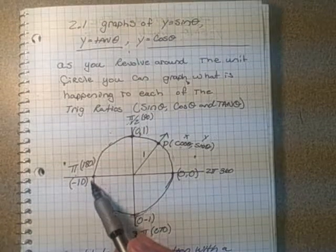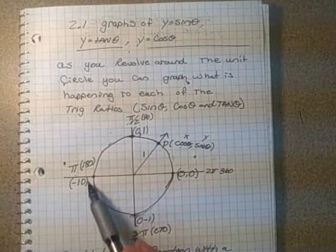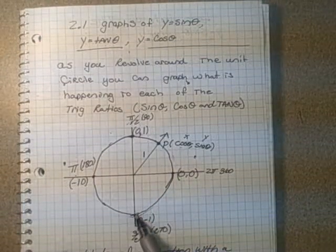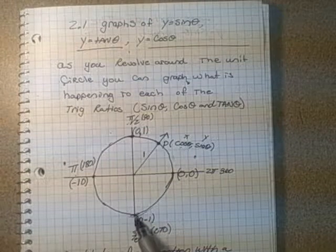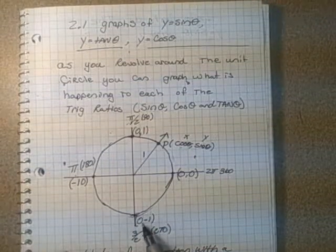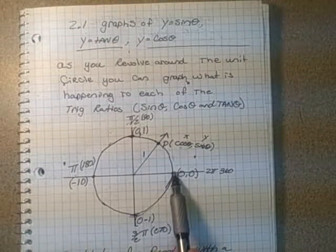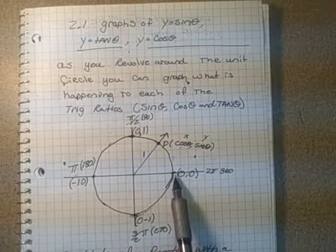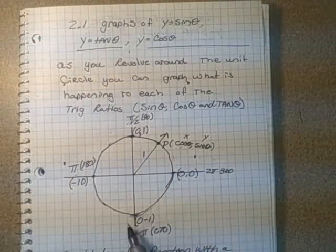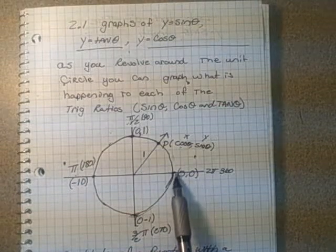Then it drops below in the same shape until it hits its minimum of negative one at 3π/2 radians or 270 degrees. Then it comes back up to zero through the last part of its graph. As it reaches 360 degrees or 2π radians, it returns to zero in the same shape.